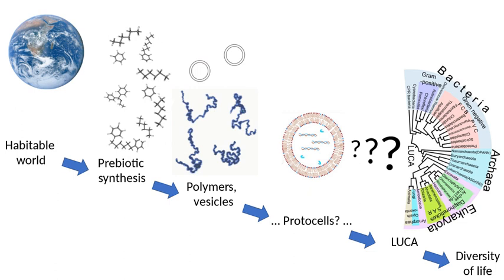Gold's Deep Hot Biosphere Model. In the 1970s, astrophysicist Thomas Gold proposed the theory that life first developed not on the surface of the Earth but several kilometers below the surface. The discovery in the late 1990s of nanobes — filamental structures smaller than bacteria that may contain DNA — in deep rocks might be seen as lending support to Gold's theory.